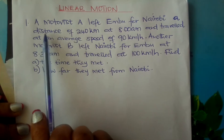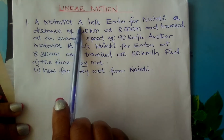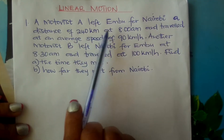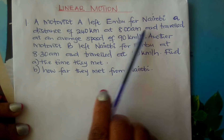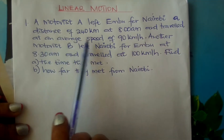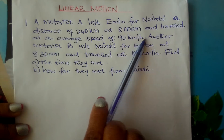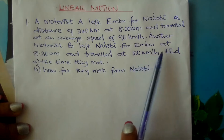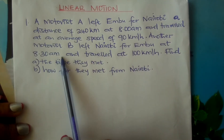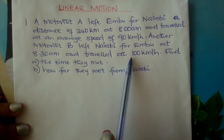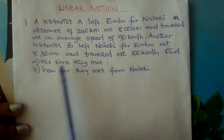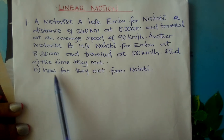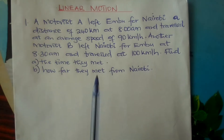Let us look at this example. A motorist A left Embu for Nairobi, a distance of 240 km, at 8 am. It travelled at an average speed of 90 km per hour. Another motorist B left Nairobi for Embu at 8:30 am, travelling at 100 km per hour. Find: A) the time they met, and B) how far they met from Nairobi.